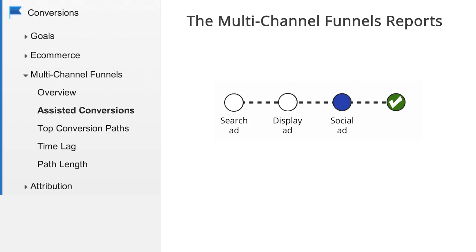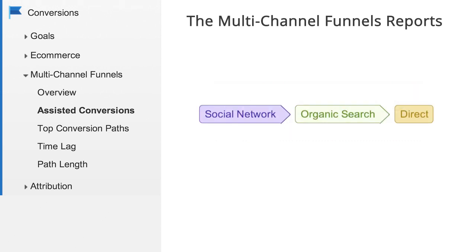Conversions can happen over a period of weeks or even months. The Multi-Channel Funnels reports allow you to answer questions about how your marketing channels work together over time to drive sales and conversions, rather than giving all the conversion credit to the last click. The information in these reports is generated from conversion paths, which contain the sequences of visits that lead up to each conversion and transaction.